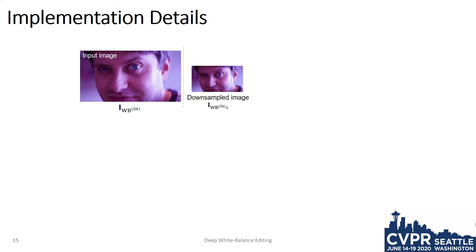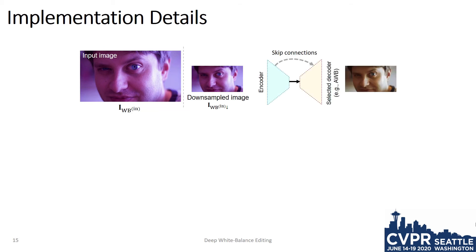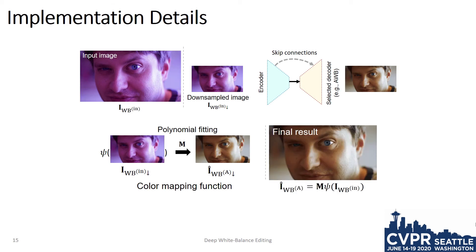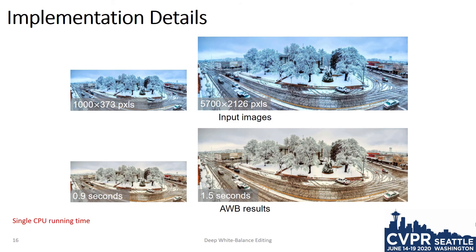The input image is downsampled to have a maximum resolution of 656 pixels in either dimension. We apply our DNN on this downsampled image to get a small output image with the new white balance setting. We then construct a polynomial color mapping function between the two downsampled input and output images. We apply this color mapping function to the full-sized image to get the final full-sized output. This procedure allows us to process large images in a reasonable time.